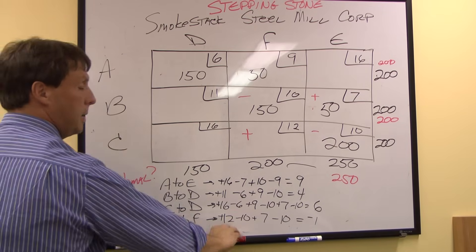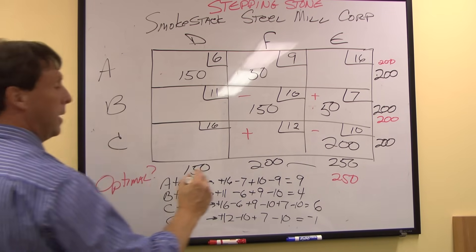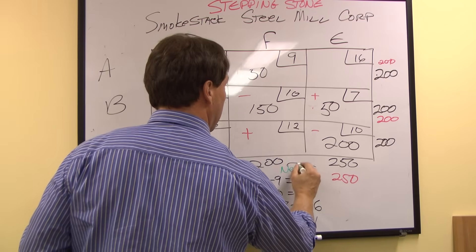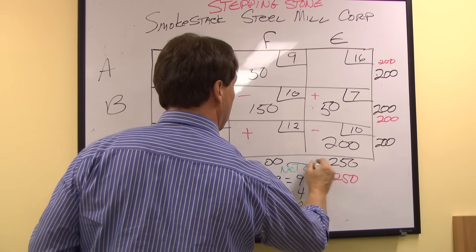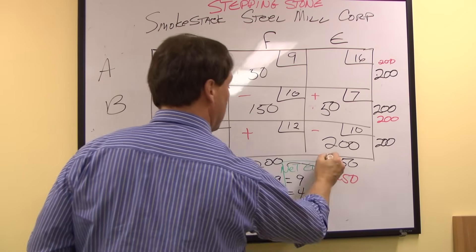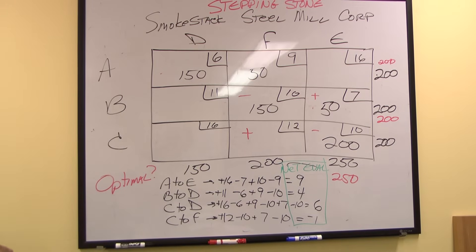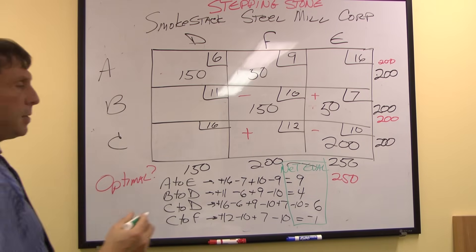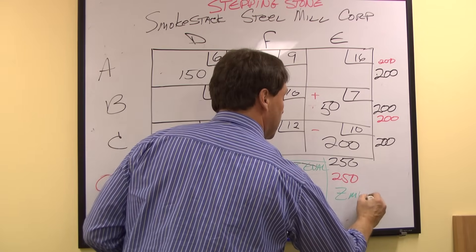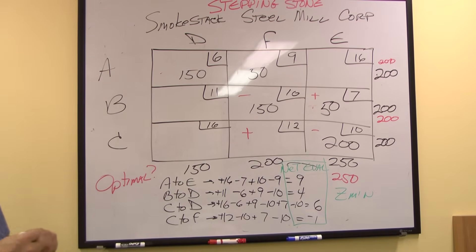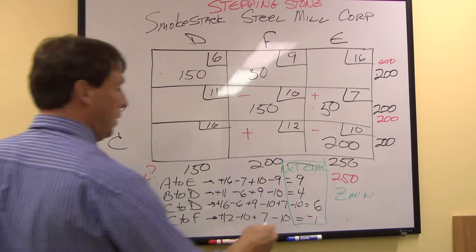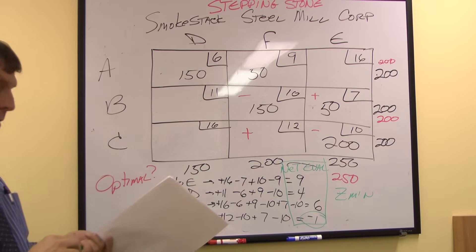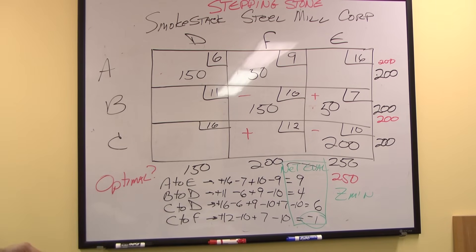What these numbers represent is the same thing we did in simplex — this is our net evaluation row. We know that transportation is a minimization problem, and to use the net evaluation rule, all the numbers have to be greater than or equal to zero for it to be optimal. We have a negative 1 here, which is telling us that we are not optimal.